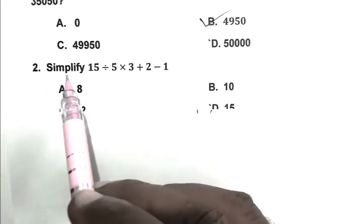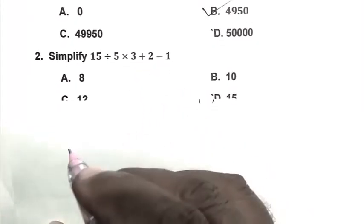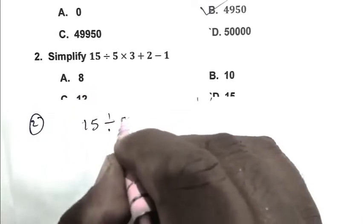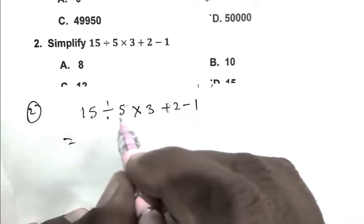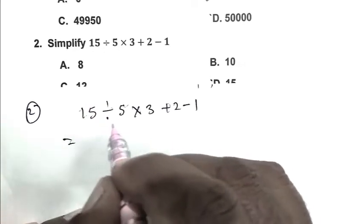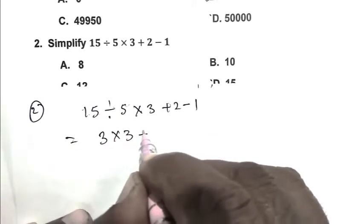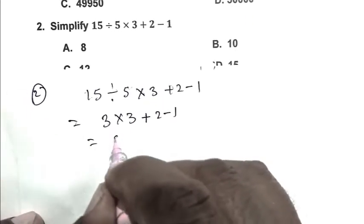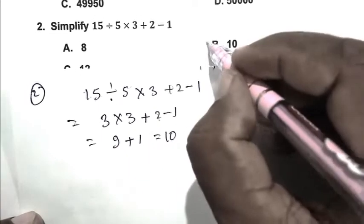Question number 2. Simplify: 15 divided by 5 multiplied by 3 plus 2 minus 1. So, the expression is 15 divided by 5, multiplied by 3, plus 2, minus 1. According to the BODMAS rule, we calculate division first. So it becomes 3 multiplied by 3 plus 2 minus 1, that is 9 plus 1. So B is the right answer.